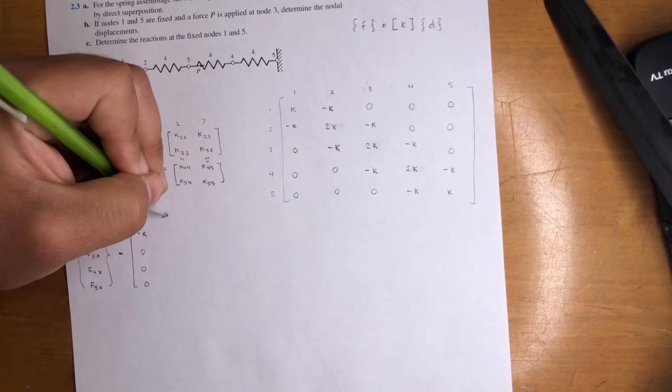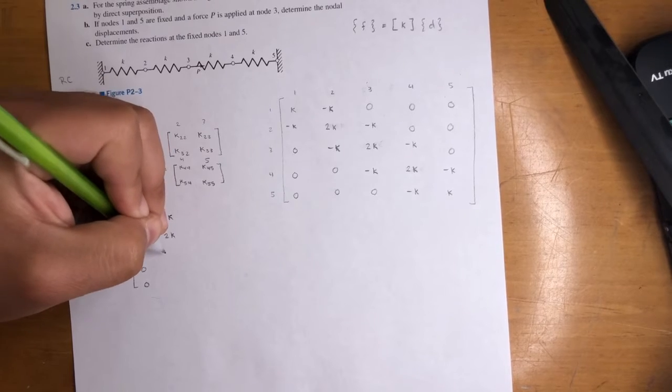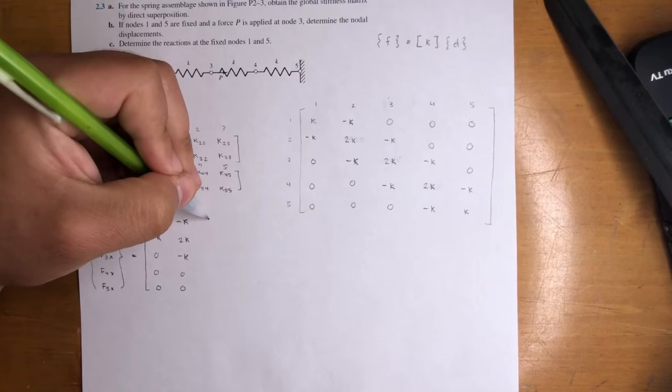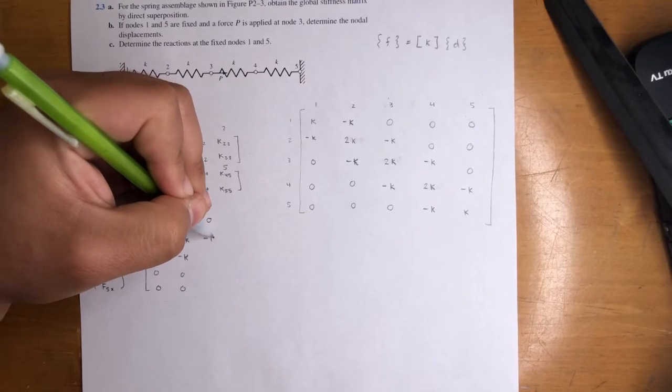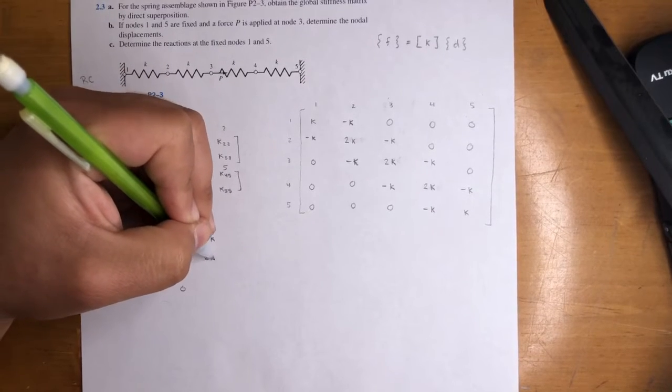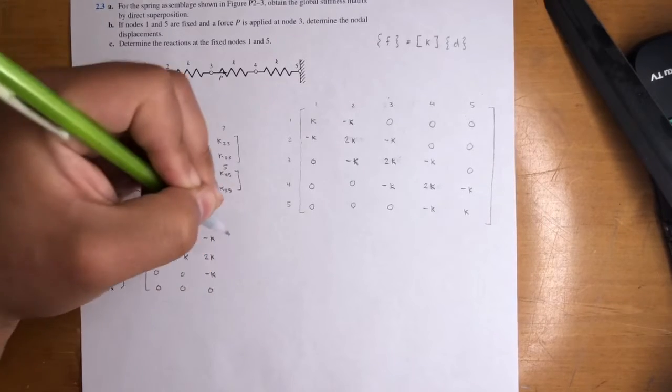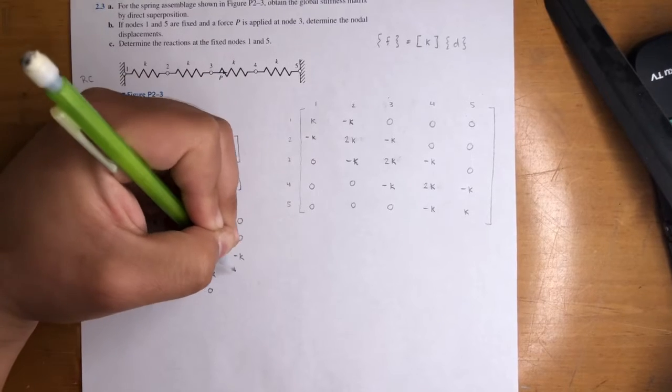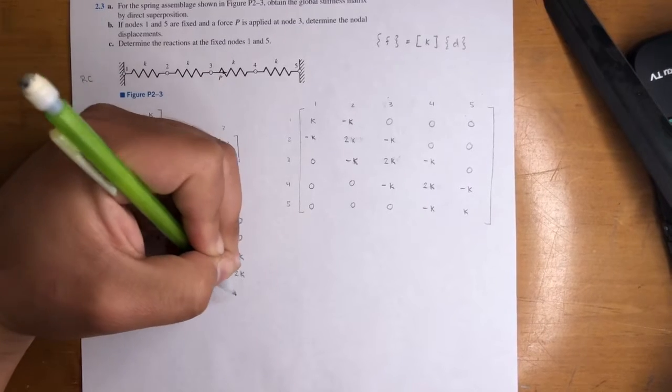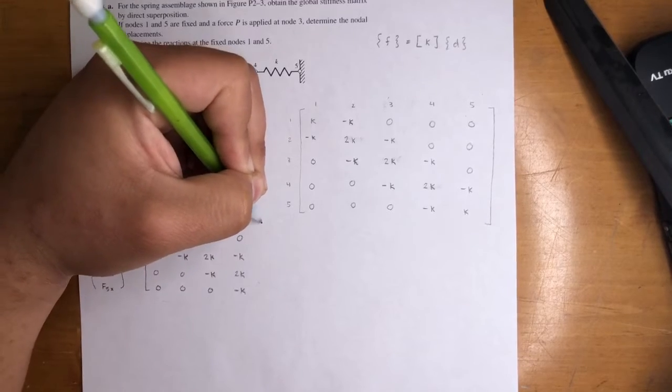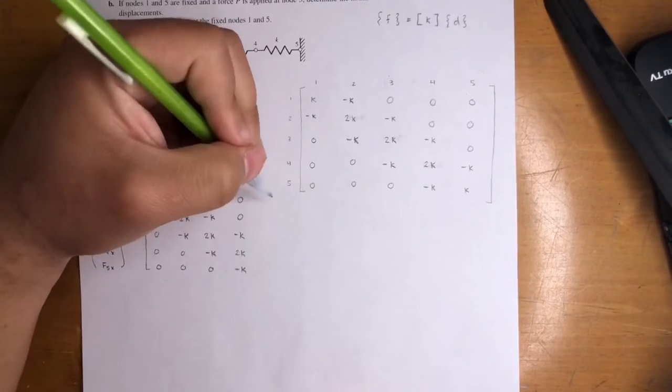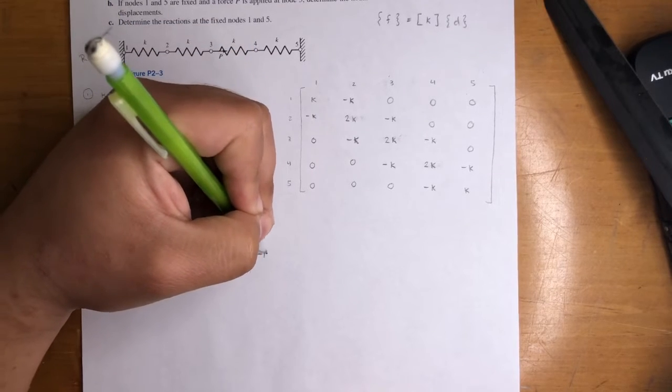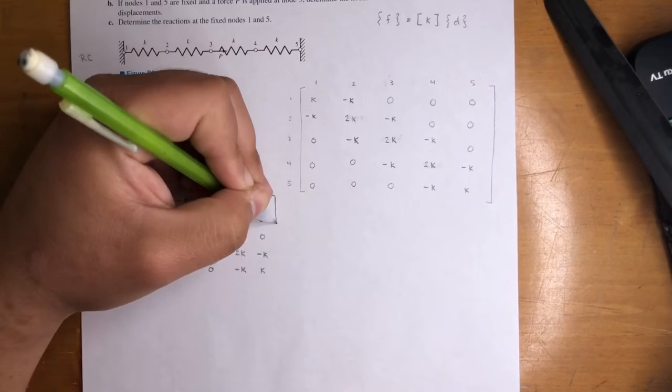We got negative K, 2K, negative K, zero, zero. We got zero, negative K, 2K, negative K, zero. We got zero, zero, negative K, 2K, negative K. Then we got, I'm just copying this right here. Zero, zero, zero, negative K, and K. Alright.